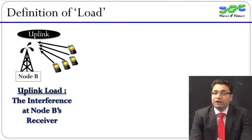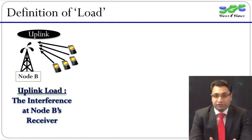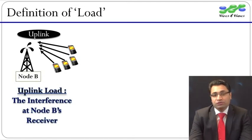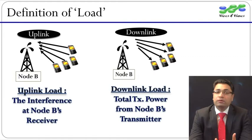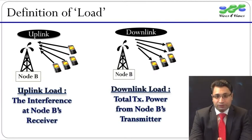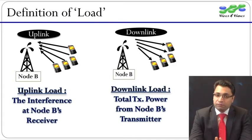Therefore, the total received power at Node B's receiver is an indicator of the current uplink load. This quantity is also known as uplink interference, or received total wideband power, RTWP, or PRX total — these are just different names for the same thing. On the downlink side, for every active user in the cell, Node B has to spend some power on downlink channels. Therefore, the total transmitted power from Node B is an indicator of the current downlink load. This quantity is known by two alternative names: total carrier power, TCP, and PTX total.